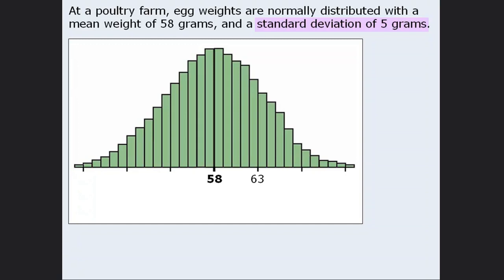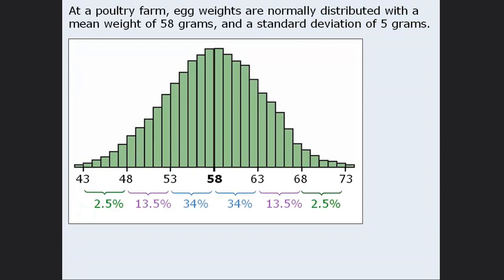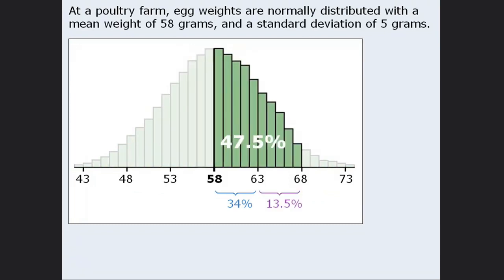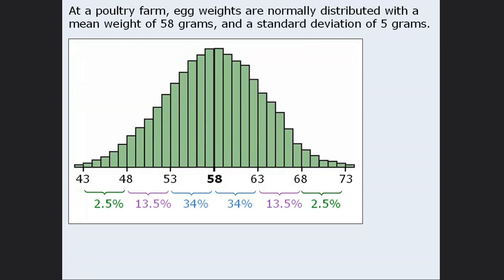The standard deviation of the egg weights is 5 grams. Adding 5 grams to 58 gives 63 grams — the mean plus 1 unit of standard deviation. Then we add 5 more grams to get the mean plus 2 units of standard deviation, and 5 more to get the mean plus 3 units. We also subtract 1, 2, and 3 units. Since this is a normal distribution, about 34% of all eggs weigh between 53 and 58 grams, and about 47.5% of all eggs weigh between 58 and 68 grams.